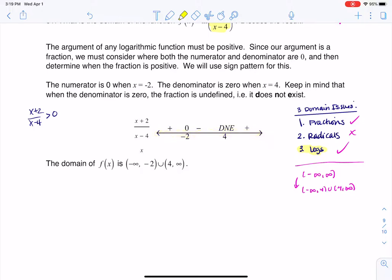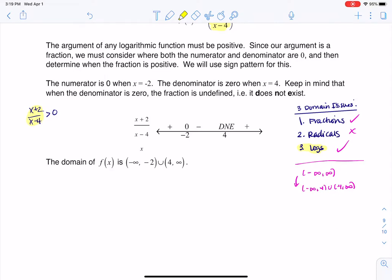It's a graphic organizer to help me keep track of when things go positive versus negative. So what I did here was I said, well, I have a problem. If I look at this fraction at 4, I can't get a y value. If I try to plug 4 into that function, that denominator is 0, so that fraction, that argument, does not exist.